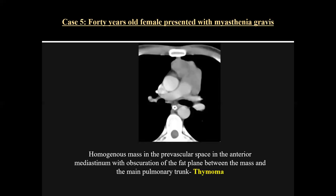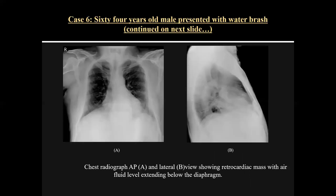Case five was a 40-year-old female with myasthenia gravis. There was a homogeneous mass in the prevascular space in the anterior mediastinum with obscuration of the fat plane between the mass and the main pulmonary trunk. This was a case of thymoma in a patient with myasthenia gravis.